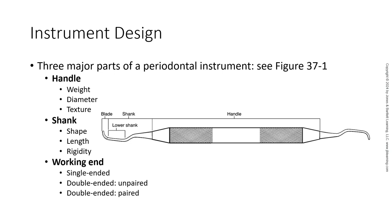Handles can have smooth or varying degrees of raised texture. A smooth handle may require you to grasp it a little bit tighter, which can lessen tactile sensitivity and increase your muscle fatigue. Ribbed or knurled patterns and serrations can provide better control.